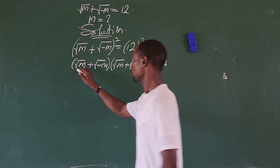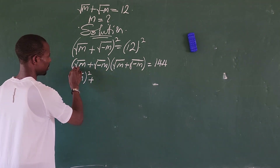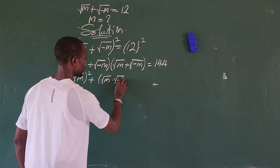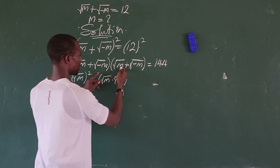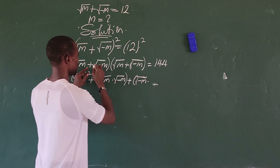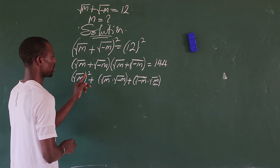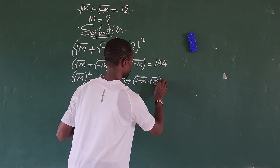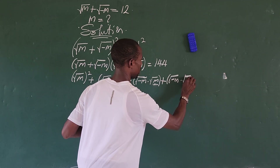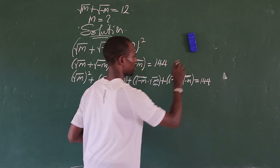Expanding term by term: square root of m all to the power of 2, plus bracket square root of m times square root of minus m, close bracket, plus bracket square root of minus m times square root of m, close bracket, plus bracket square root of minus m all to the power of 2, close bracket — equals 144.